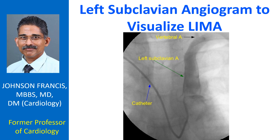In the femoral approach, left subclavian angiogram is usually taken with the Judkins right coronary catheter, which can be pushed further from the upper descending aorta to cannulate the left subclavian artery. This is usually done while withdrawing the JR catheter after right coronary angiogram. The convenience is that we don't have to use another catheter for cannulating the left subclavian artery.